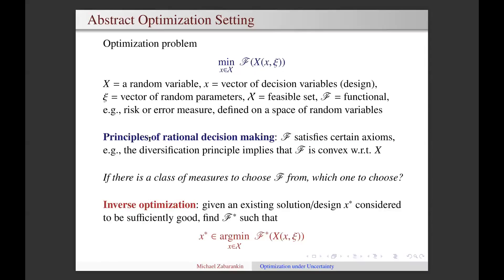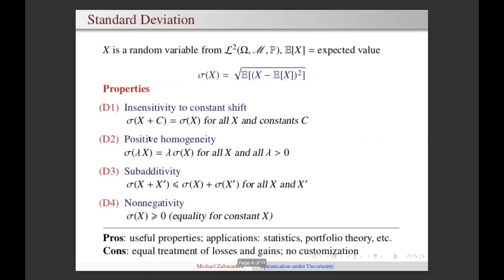Suppose there is a solution or design x star which is known to be sufficiently good from either past experience or from a similar problem. For example, an investor may have either previous or existing portfolio of financial assets that he or she is relatively satisfied with. Then the inverse optimization problem is to find a functional F star such that the original optimization problem with this functional yields the optimal solution x star. So this is the outline of one of the approaches in optimization under uncertainty and the rest of the talk will exemplify this approach in portfolio theory where deviation measures are used as objective functions.